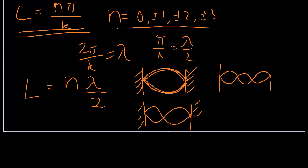So this n here we call mode: n equals 1, n equals 2, and so on and so forth. And because the length is fixed, we can rearrange this.